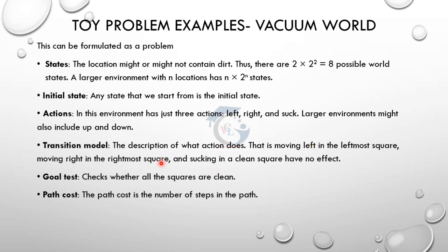On the right side, the rightmost square - what happens when the square is clean? If we look at the diagram, if only the square is clean, when the square is clean there is no effect. The square must have no effect. The final goal is that all squares are clean.